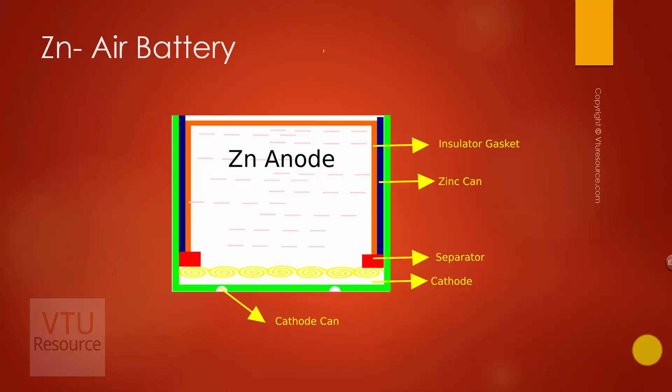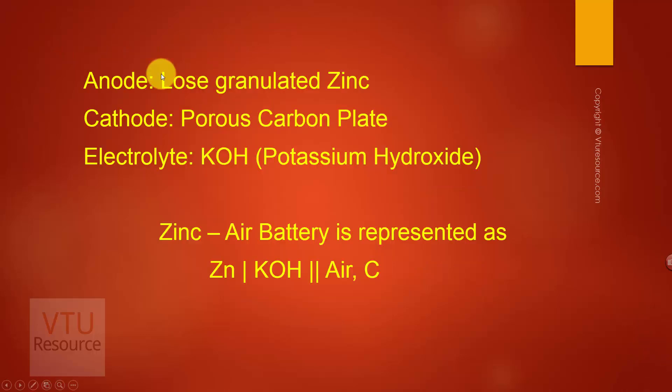Let us discuss the construction and working of zinc air battery. In zinc air battery, the anode is loose granulated zinc. Cathode is made up of porous carbon plate and the electrolyte is potassium hydroxide. Zinc air battery can also be represented as Zn | KOH || Air, C.